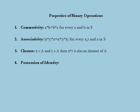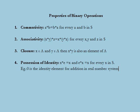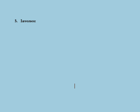Next we study the identity element for a binary operation. A binary operation denoted by star defined on a set S is said to possess an identity if and only if X star E equals X and E star X equals X for every X in S, where E denotes the identity element. For example, 0 is the identity element for addition in the real number system since 0 + X = X + 0 = X, whereas for subtraction, 0 is not an identity element since X − 0 is not equal to 0 − X.